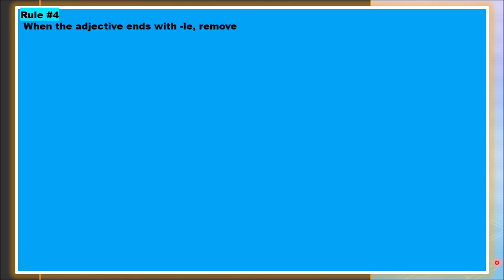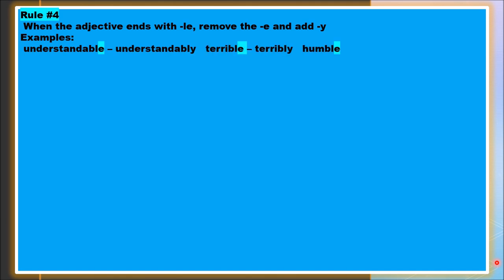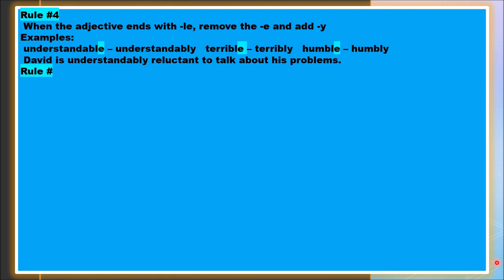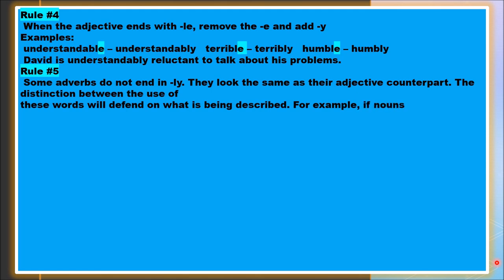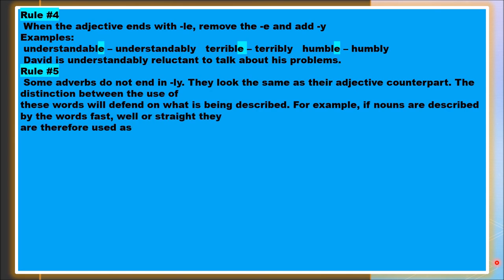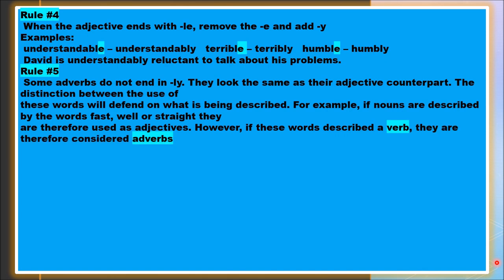Rule 4: When the adjective ends in -le, remove the e and add -y. Examples: understandable → understandably, terrible → terribly, humble → humbly. Sentence: David is understandably reluctant to talk about his problems. Rule 5: Some adverbs do not end in -ly — they look the same as their adjective counterpart, like fast, well, or straight. If they describe a noun, they are adjectives; if they describe a verb, they are adverbs.